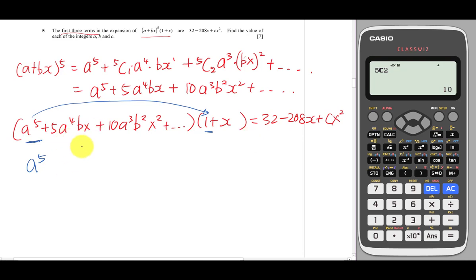I'll solve this later—a^5 also needs to multiply the second term. But I'll just use the constant here since only one term gives a constant: a^5 = 32. Taking the fifth root of 32, a equals 2.